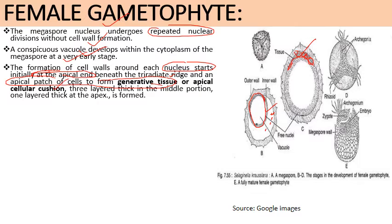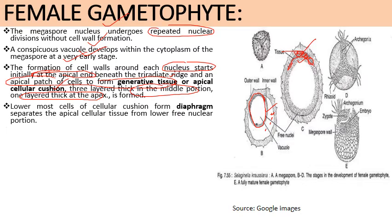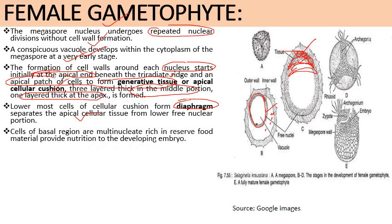The generative tissue is three layers thick in the middle portion and single layer thick at the apex. The lowermost cells of the cellular cushion form a structure called the diaphragm, which separates the apical cellular tissue from the lower free nuclear portion. Cells of the basal region are multinucleate and rich in reserve food material, providing nutrition to the developing embryo.